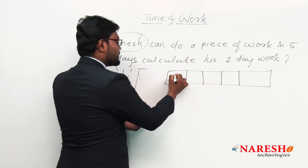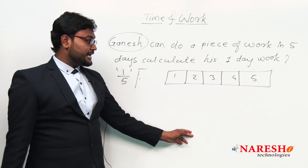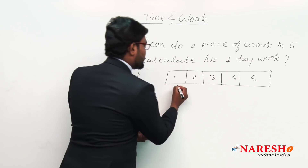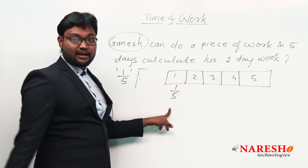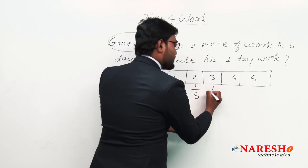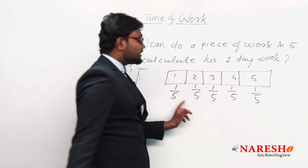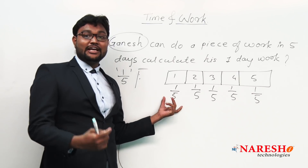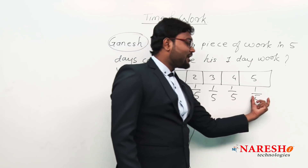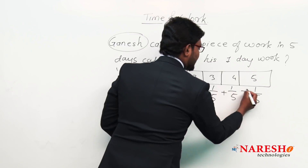So how many parts are there? One, two, three, four, five. On the first day, out of five parts, he does the first part — so his one-day work is one by five. Second day: one by five. Third day: one by five. Fourth day: one by five. Fifth day: one by five. On every single day he is completing one by five of the work.